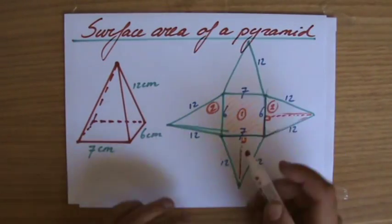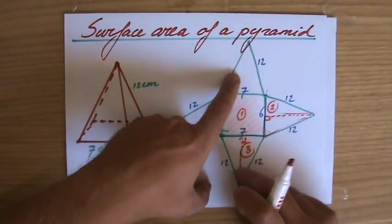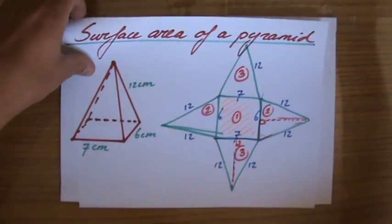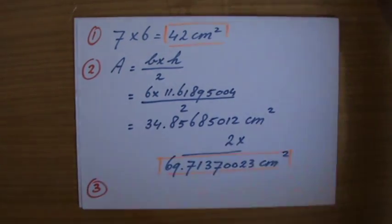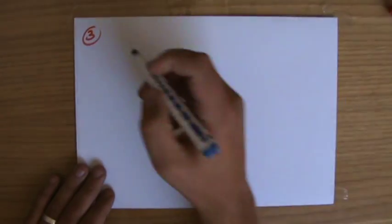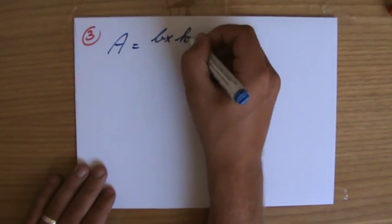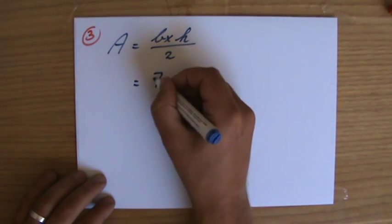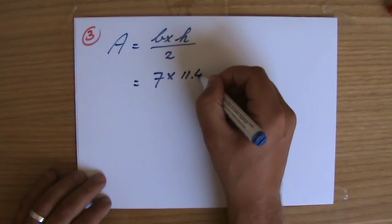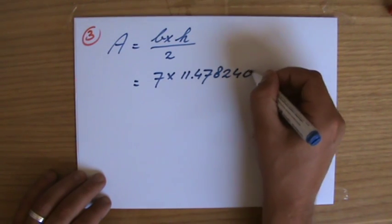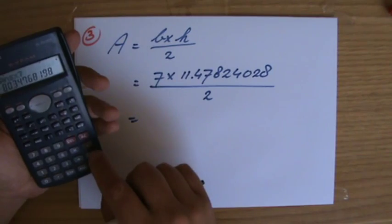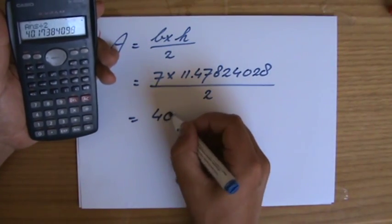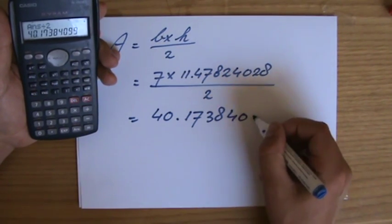So, I'll put a little 3 here to structure my workings. 1, 2, 3, there we go. And that then refers to this one, 3. Now is that going to fit? No, it's not. So, I'm going to work it out on paper number 4. Area of a triangle is base times height divided by 2, or half times base times height, it's all the same. The base is 7 times the height we've just calculated is 11.47824028 divided by 2 equals, let me grab my calculator, times 7 equals, divided by 2 equals, so one of those triangles is 40.17384099.